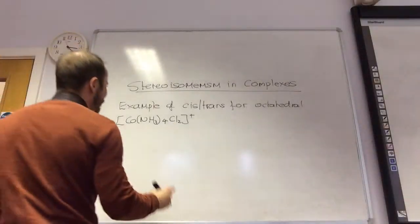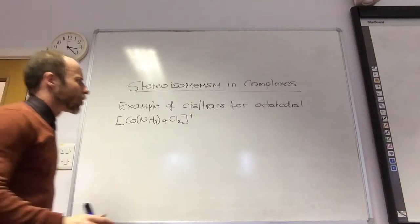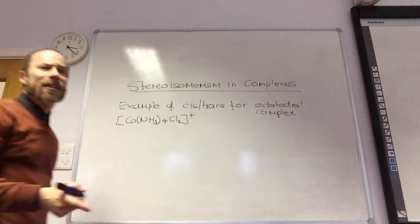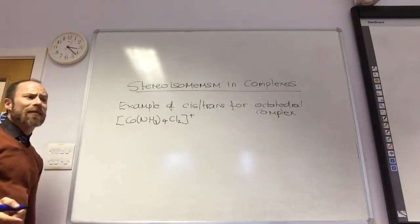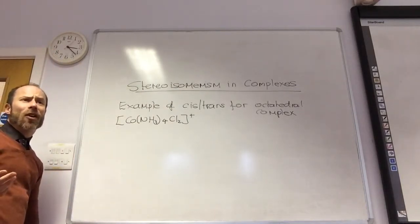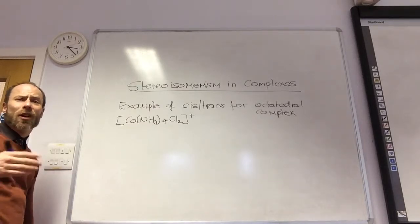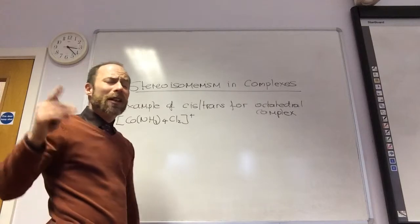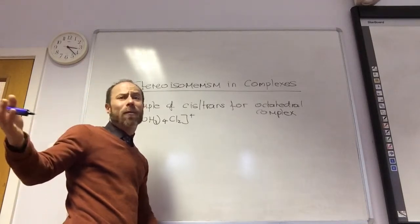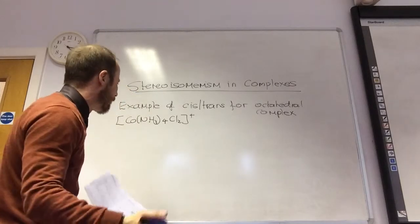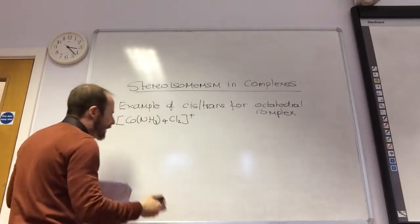So we're going to now do an example of cis-trans for the octahedral complex. Because you do need to know examples, because sometimes in a question they'll ask you describe stereoisomerism in transition metal complexes using relevant examples. So you actually have to be able to tell them proper examples. The key mistake that people make is they make up complex ions, just like random metals and ligands, like no tomorrow. They don't like that.